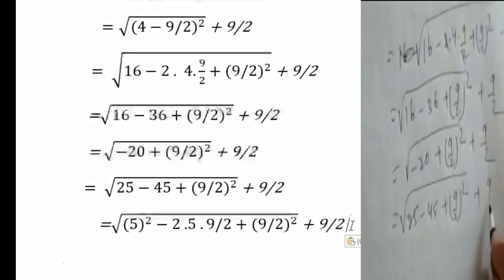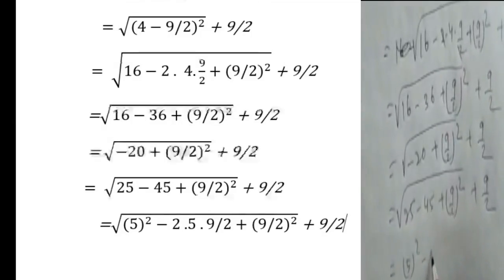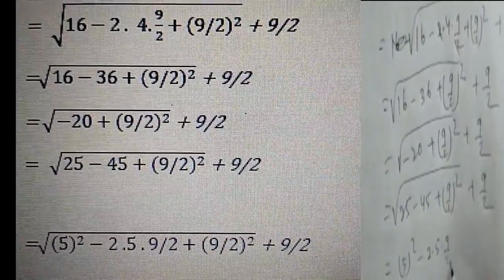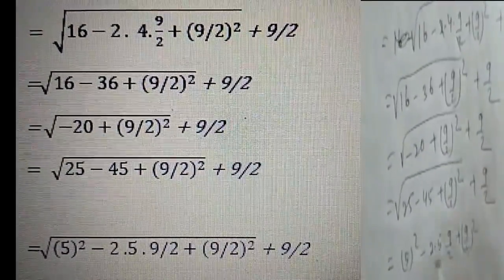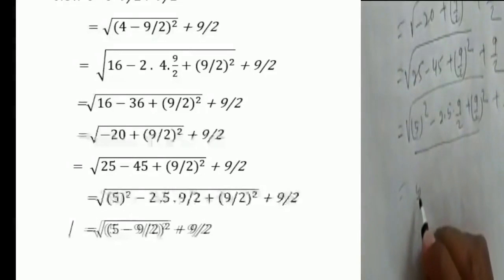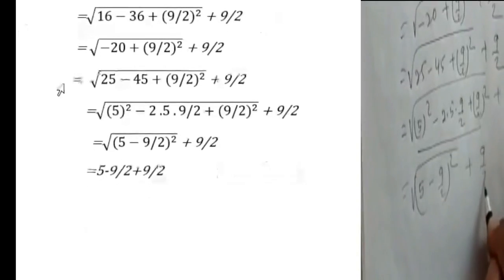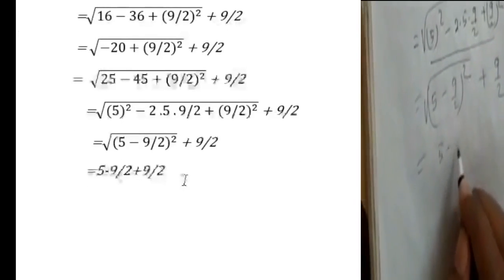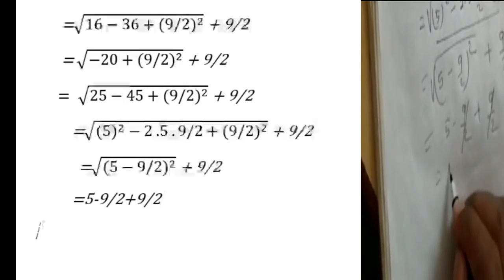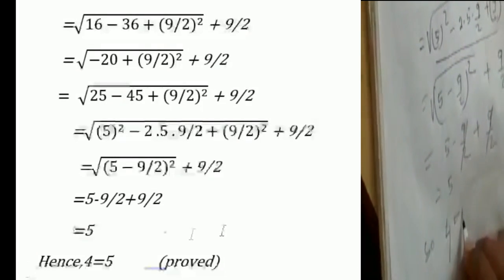Therefore, root of 1 plus 9 by 2 equal to 25, 5 plus square minus 45, which can be 2 into 5 into 9 by 2 plus 9 by 2 the whole square root over plus 9 by 2. Now this is a minus b the whole square: 5 minus 9 by 2 whole square root over plus 9 by 2. This equals 5 minus 9 by 2 plus 9 by 2. The 9 by 2 and 9 by 2 cancel, equal to 5. So 4 equals 5.